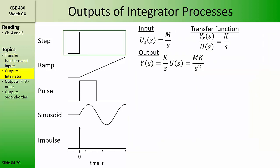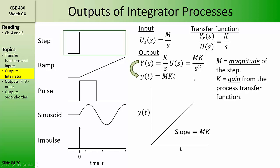Now let's feed some of these inputs to the animals in our transfer function zoo and see what the transfer functions output. We'll begin with the integrator transfer function and feed it a step input. We'll represent each of the inputs with the function u and each of the outputs with the function y. When the integrator with magnitude k is fed the step input of magnitude m, we can find that the output in the Laplace domain is mk over s squared. You'll recognize this reciprocal s squared functionality as a ramp in the time domain — that is, y linearly increases with time with a slope mk, where m is the magnitude of the step and k is the gain of the integrator transfer function.